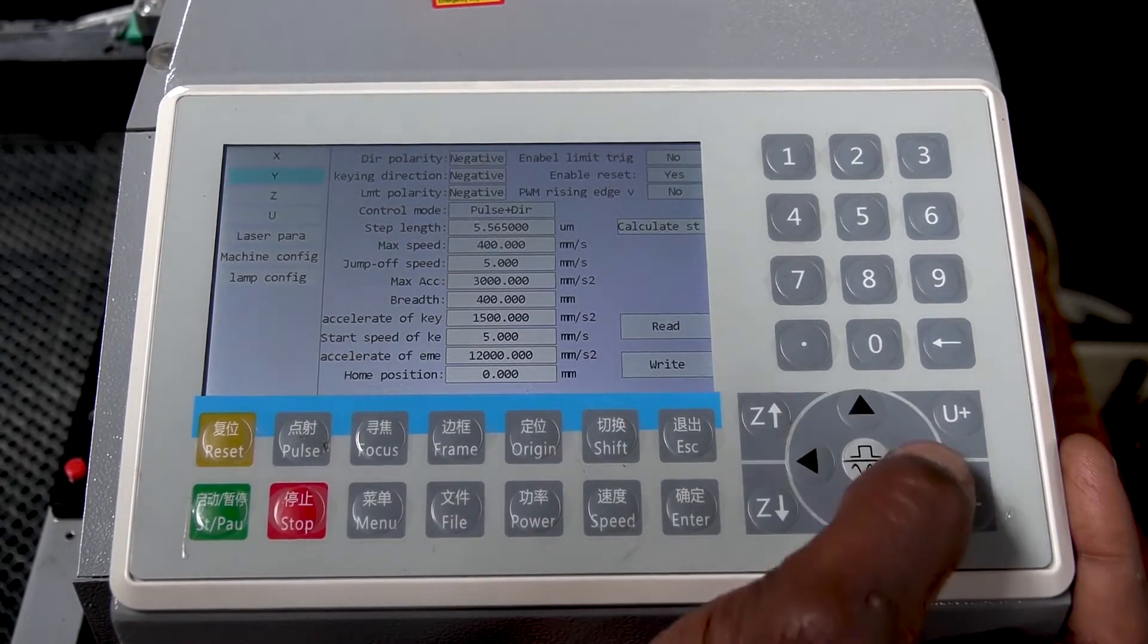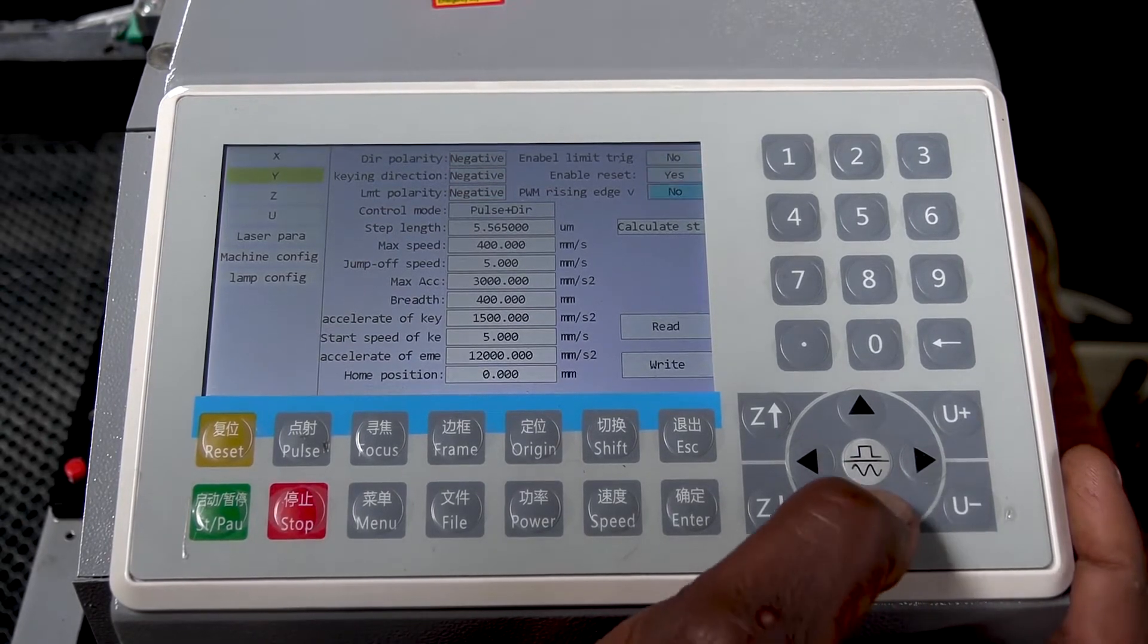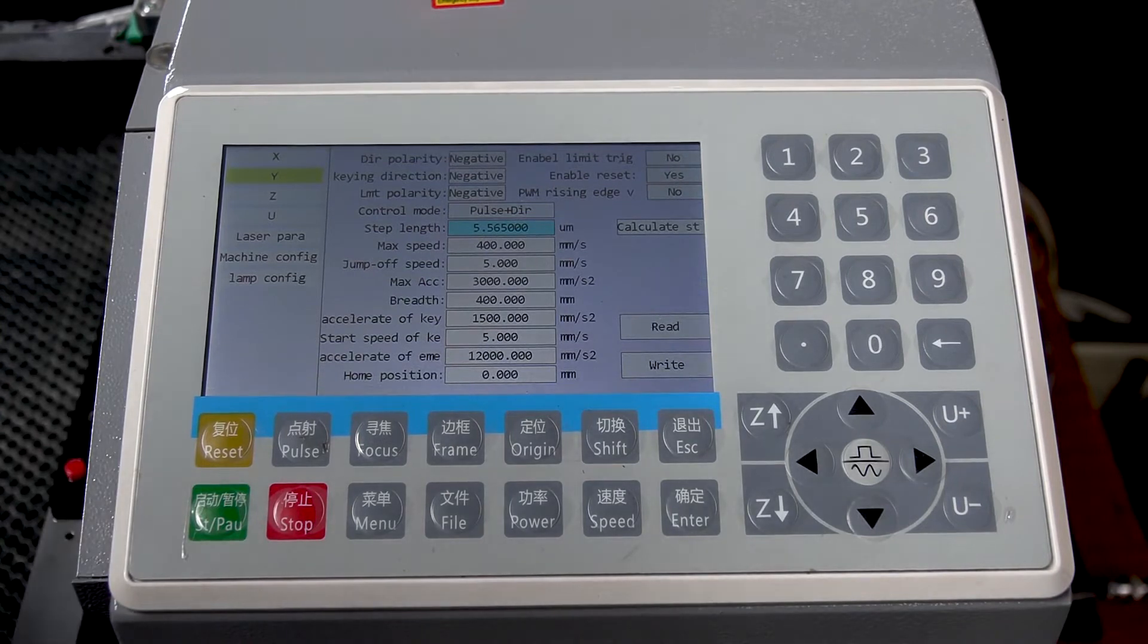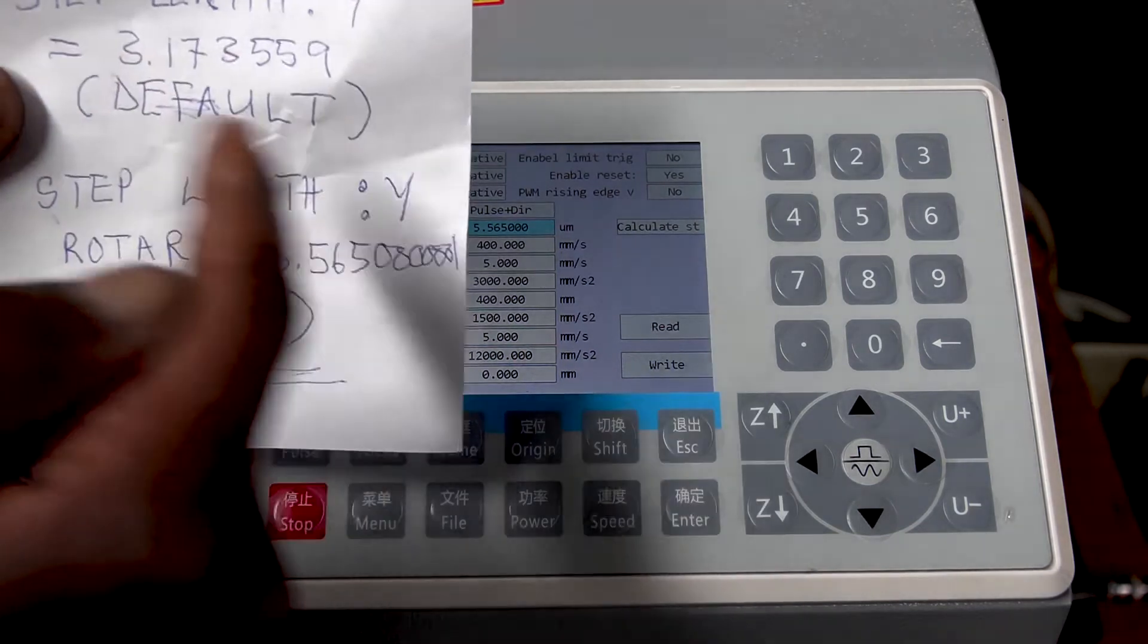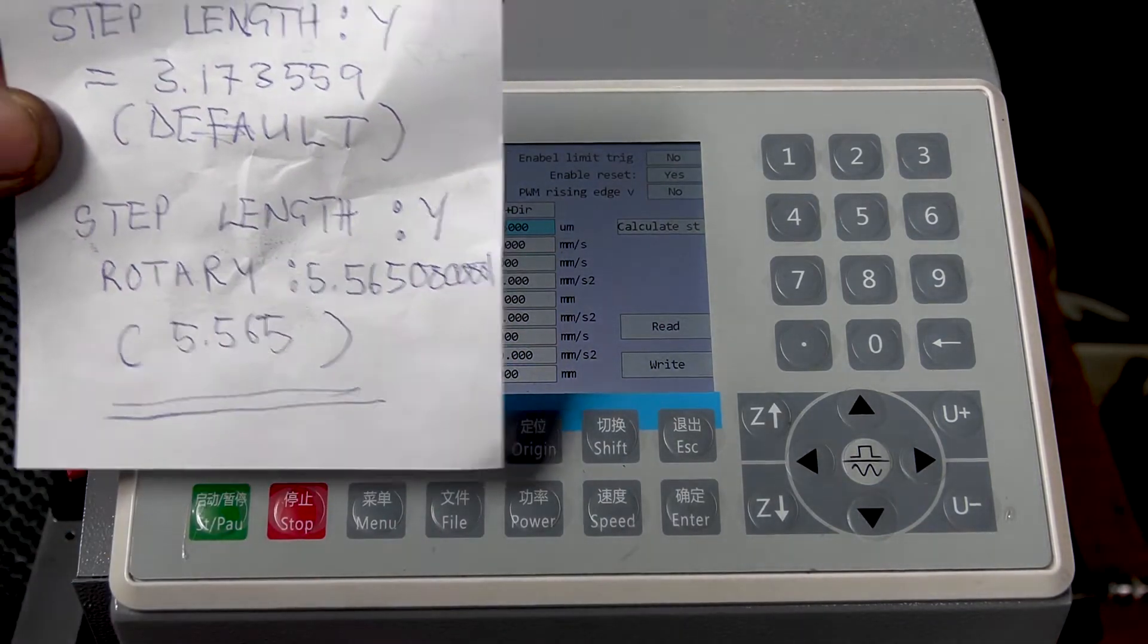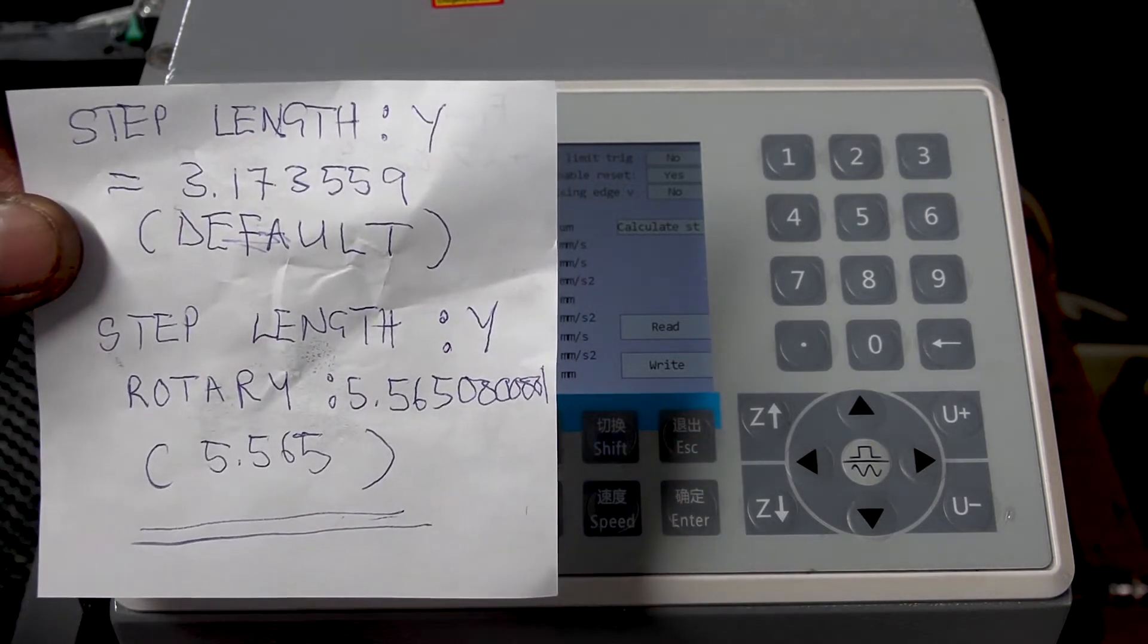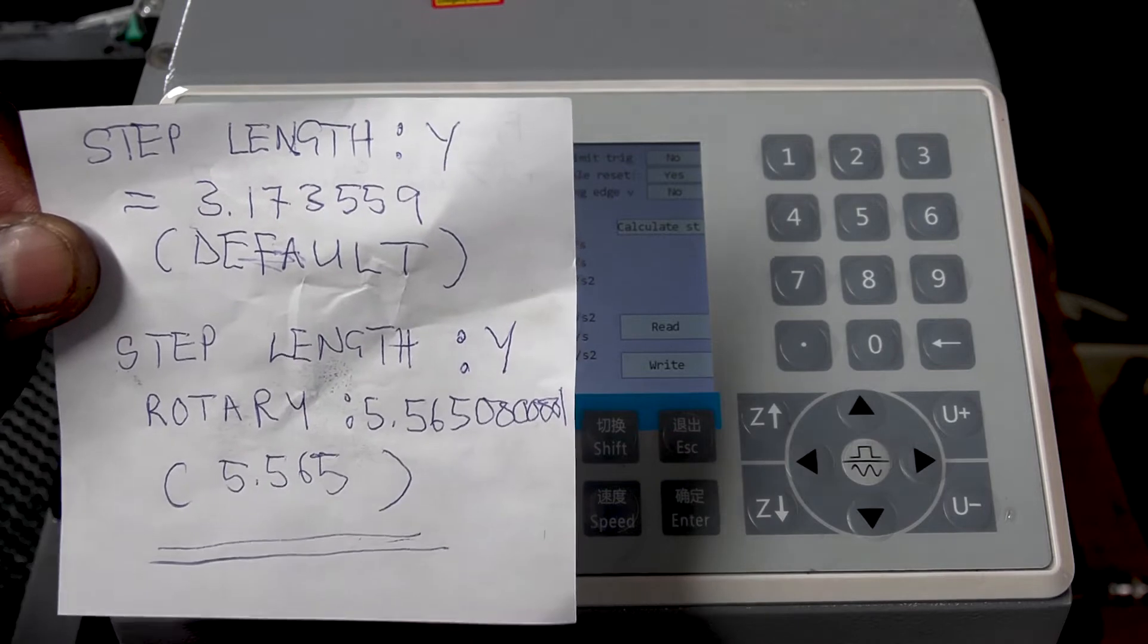So you scroll, use the side key, scroll down to Y. So to make it simple for yourself, rather make a note where you got your default step length value for Y and your rotary step length. You can always use to interchange these two values.